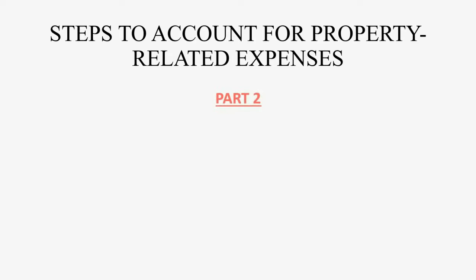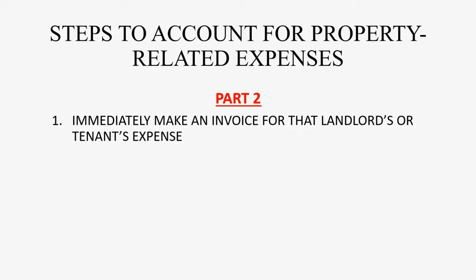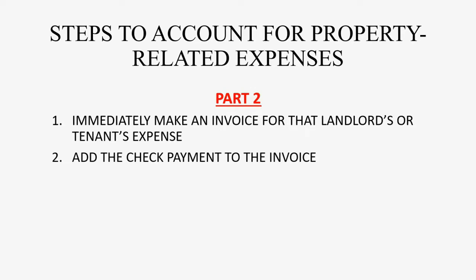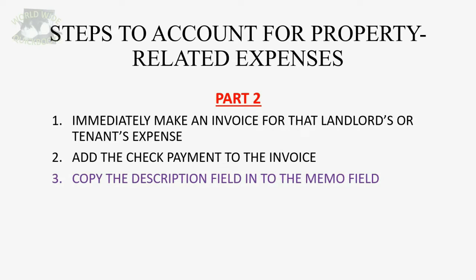Now that we've written the check, we must do the same second step that we learned about in prior videos when we previously learned how to apply property-related expenses to the landlord's payout balance. Now we're applying it to the tenant's deposit. We must immediately make an invoice for that landlord's or tenant's expense, add the check payment we just recorded to that invoice, copy the description field into the memo field, and then save the invoice.